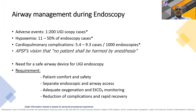Looking at the evidence, the reported incidence of adverse effects in upper GI endoscopies is about 1 in 200, and hypoxia occurs in approximately 10 to 50 percent of endoscopy cases. The actual incidence may be much higher than reported. Cardiorespiratory complications occur in the range of 5 to 9.3 per thousand endoscopies—something nobody wants in the endoscopy area.